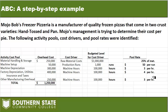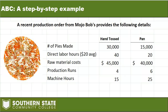To apply ABC, we need to come up with an activity pool rate. We take the overhead cost for a particular area and divide it by the budgeted level, which gives us the pool rate. In our example, we have a pool rate of 25% of materials for material handling, $50 per run for machine setup, $3 per machine hour for machine depreciation, $4 per machine hour for factory depreciation, and $3 per hour for other manufacturing overhead. All other details are the same as the normal costing example — 30,000 hand-tossed pies and 15,000 pan pies.